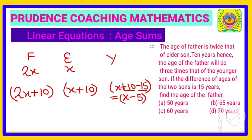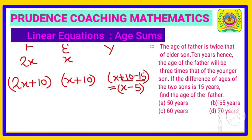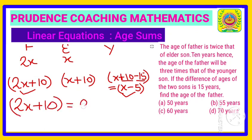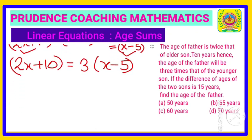According to the question, the age of the father will be 3 times the younger son after 10 years. So the father's age after 10 years, which is 2x plus 10, will be equal to 3 times the age of the younger son, that is x minus 5.